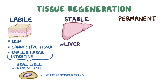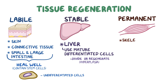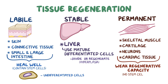Stable tissue, like the liver, recovers from injury by having mature, differentiated cells divide or regenerate via hyperplasia. Permanent tissues like skeletal muscle, cartilage, neurons, and cardiac tissue have a weak regenerative capacity because they lack these stem cells and cannot replicate via hyperplasia. Typically, injured permanent tissues are replaced by scar tissue or fibrosis, ultimately resulting in loss of function of the tissue.